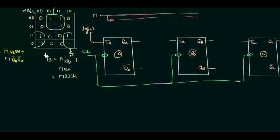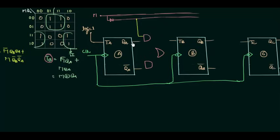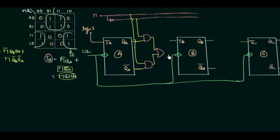To implement TB = M̄·QA + M·QA complement, we need two AND gates and one OR gate. The first AND gate takes M complement and QA as inputs. The second AND gate takes M and QA complement as inputs. Both AND gate outputs feed into an OR gate. The output of the OR gate goes to TB — which is equivalent to M XOR QA.